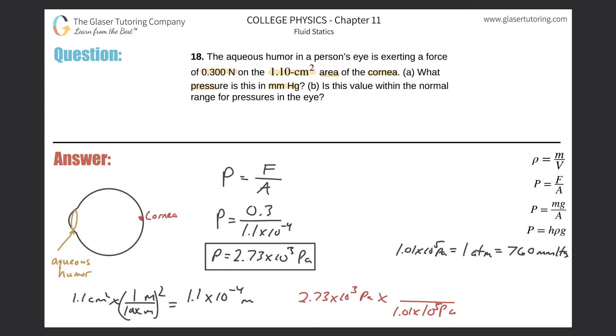That's all we got to do—just divide that answer by 1.01 times 10 to the 5 and we shall have it.